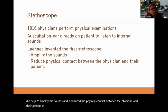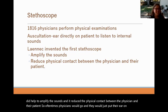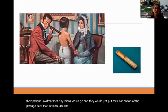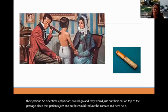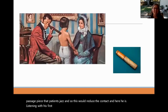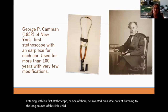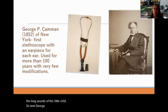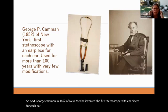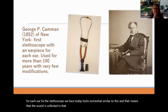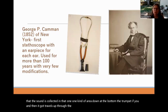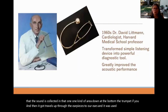Here is Laennec listening with his first stethoscope to the lung sounds of a small child. Next, George Cammann of New York in 1852 invented the first stethoscope with earpieces for each ear — similar to today's stethoscope. Sound is collected at the bottom trumpet piece and travels up through the earpieces to our ears. It was used for more than a hundred years without much modification.